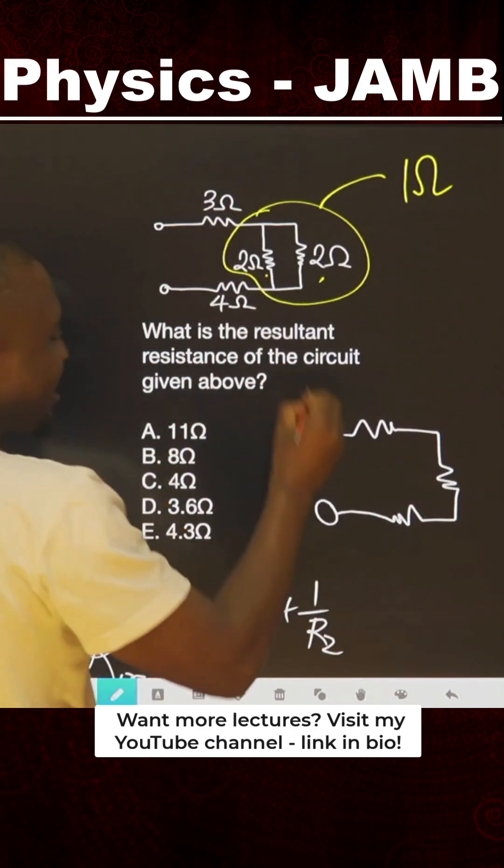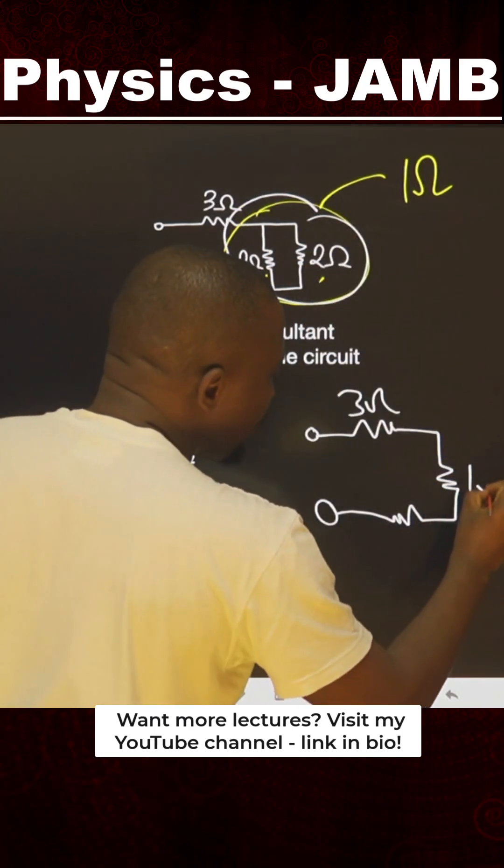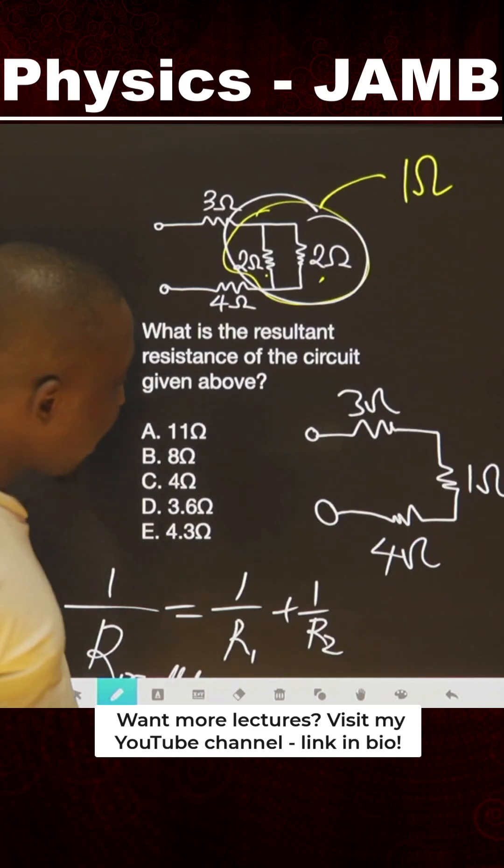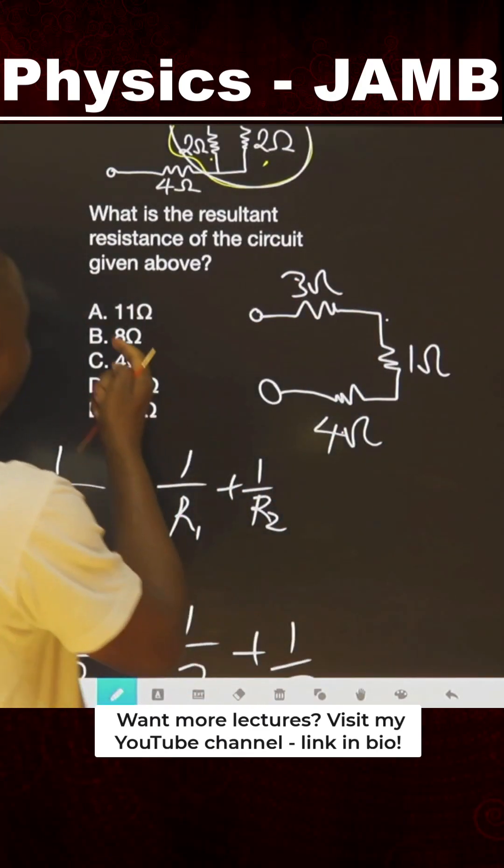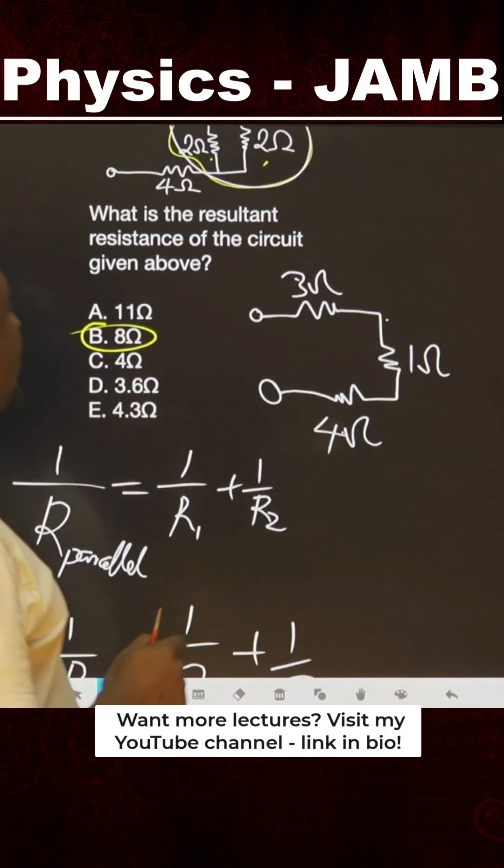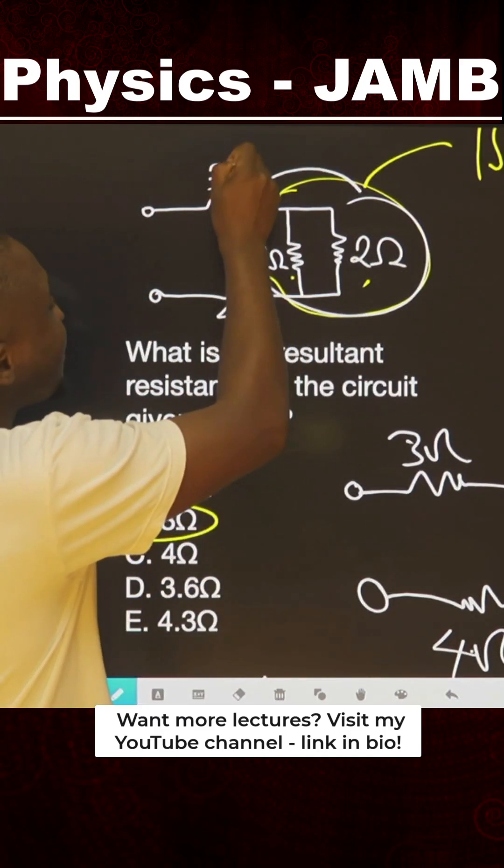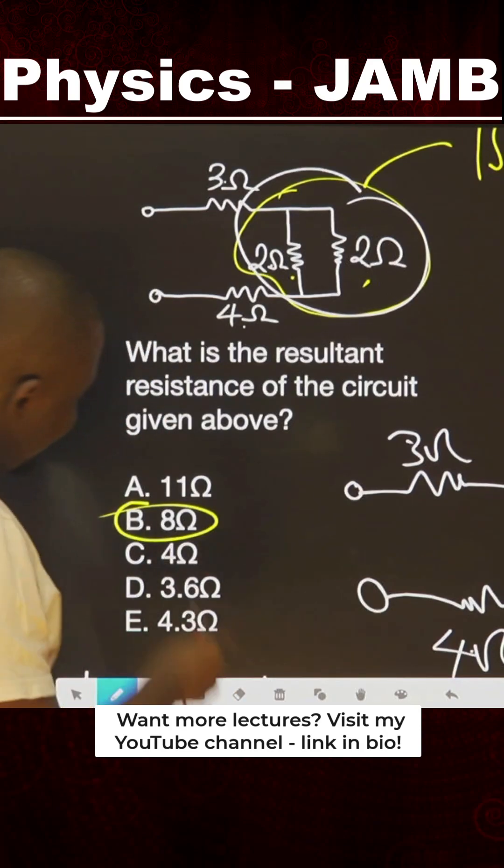Therefore now, this plus this is 4, plus this is 8. It means the answer is B, 8Ω. What you should know about JAMB is this: some students will not even want to calculate. They will add this plus this - 5, plus this - 7, plus this - 11. It's waiting for you, so you must know it. Don't assume.